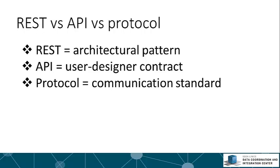We've now introduced three big concepts, so let's review. REST is an architectural pattern — a description of what a certain kind of program or architecture should look like. An API is a user-designer contract: the developer designs and documents an interface, and the client can use the interface without knowing the details. A protocol is a communication standard; HTTP is just one of many different protocols.